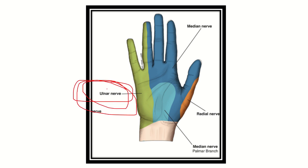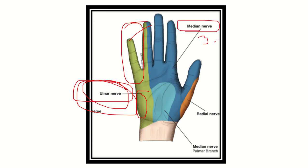It is now clear that the hypothenar area and medial one and a half fingers are supplied by the ulnar nerve. The median nerve supplies the lateral three and a half fingers — that is, the thumb, index, middle, and part of the ring finger — and a small additional portion.